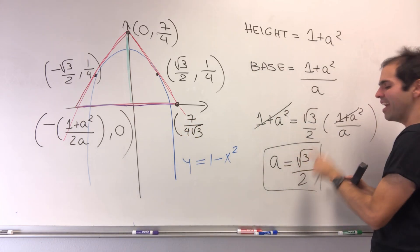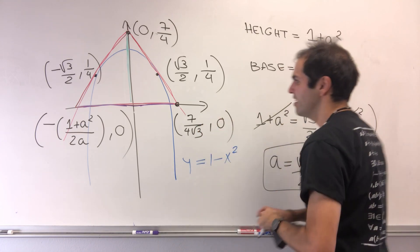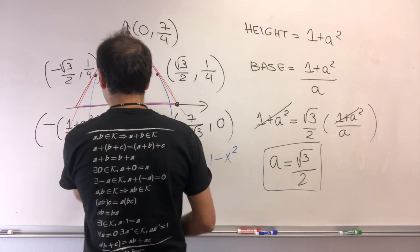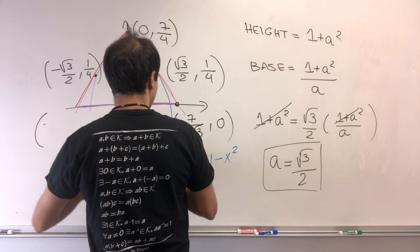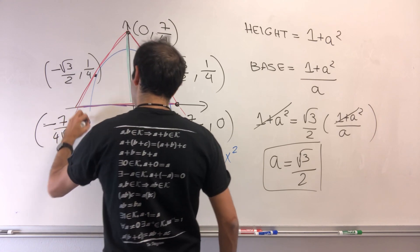Of course, because 2a is square root of 3, so you're just dividing by square root of 3. It's 0, and the other one is minus 7 over 4 square root of 3, 0.